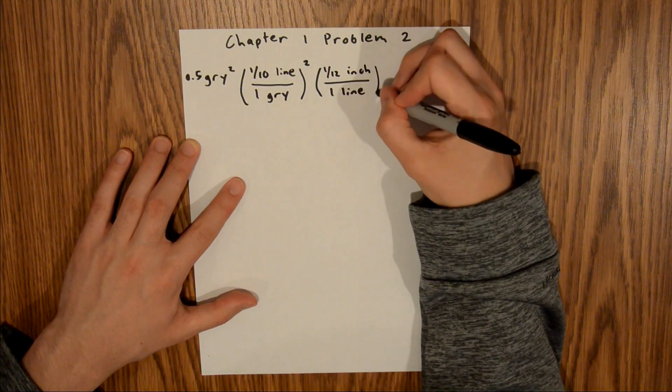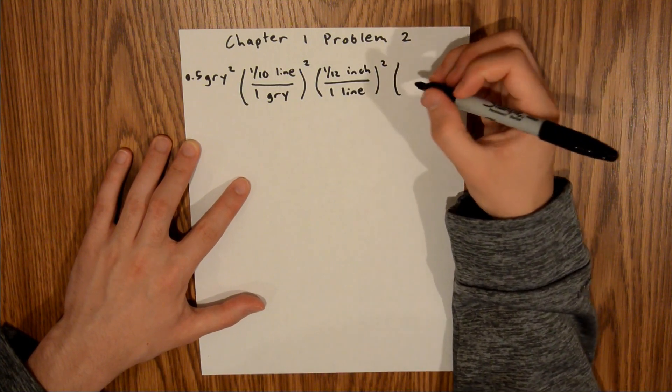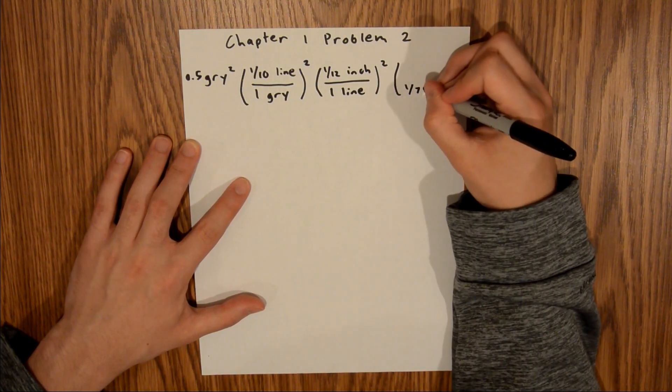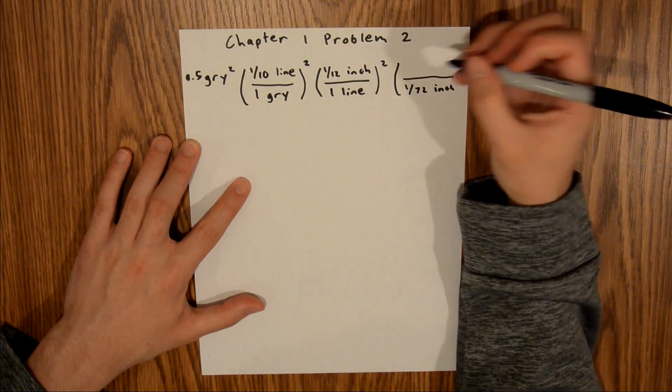Same thing, for units to work out, we need to square this quantity. Then, finally, we are told that one seventy-second of an inch is equal to one point.